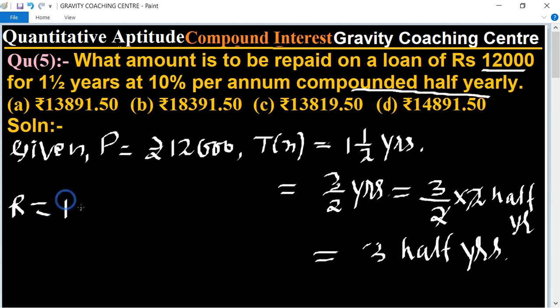And Rate equals 10% per annum. Since it's changed to per half annum, we divide by 2, which gives 5% per half annum.